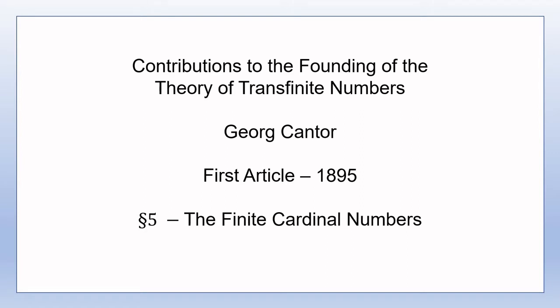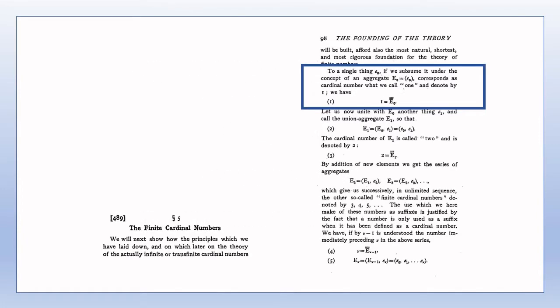Section 5 is titled, The Finite Cardinal Numbers. This section starts on page 97, but there's only a few lines at the bottom of page 97 which relate to section 5, none of which require any explanation.